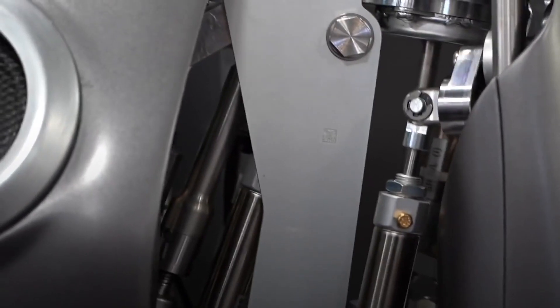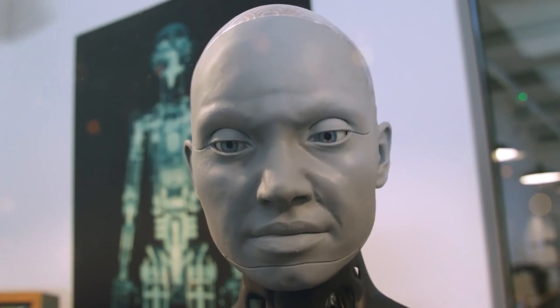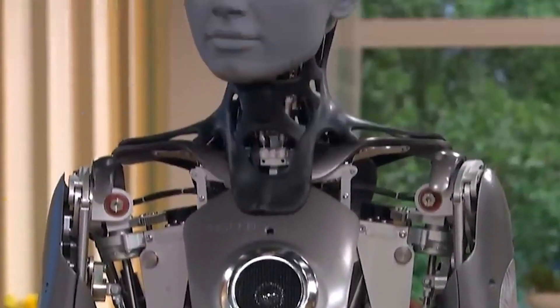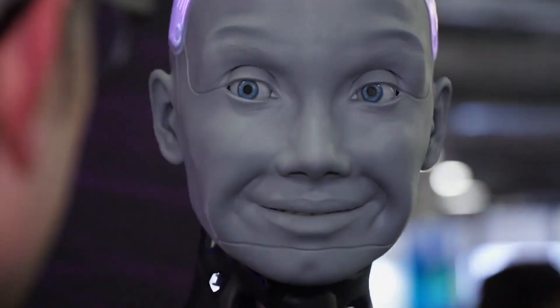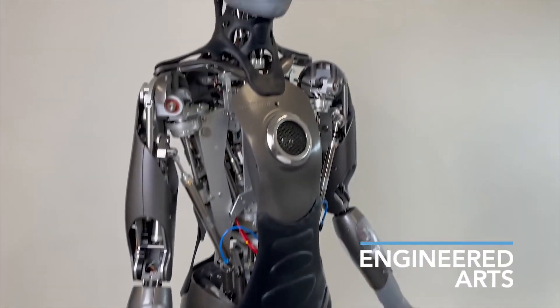Created by Engineered Arts, Emeka's design is a blend of art and technology. Its genderless appearance and articulated motorized parts set it apart. Emeka's physical appearance is striking. Its face, made of a rubbery blue material, can mimic human expressions. Its hands can grasp objects, and its body moves with fluid grace.